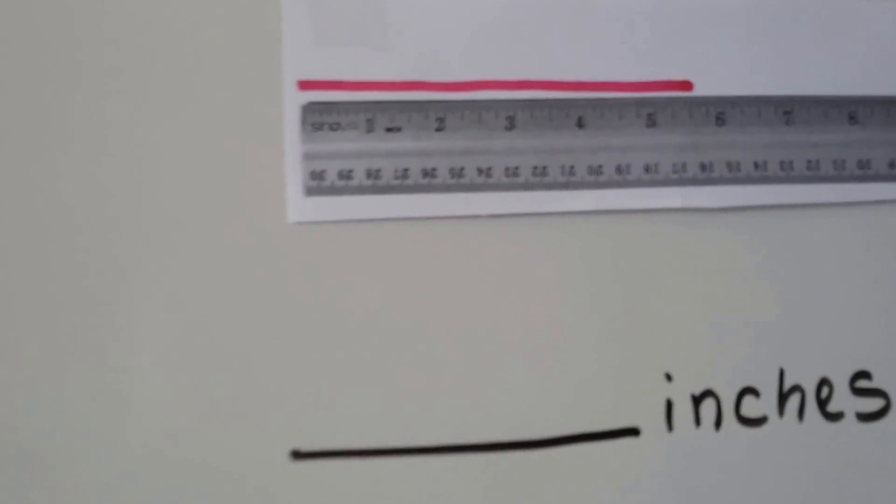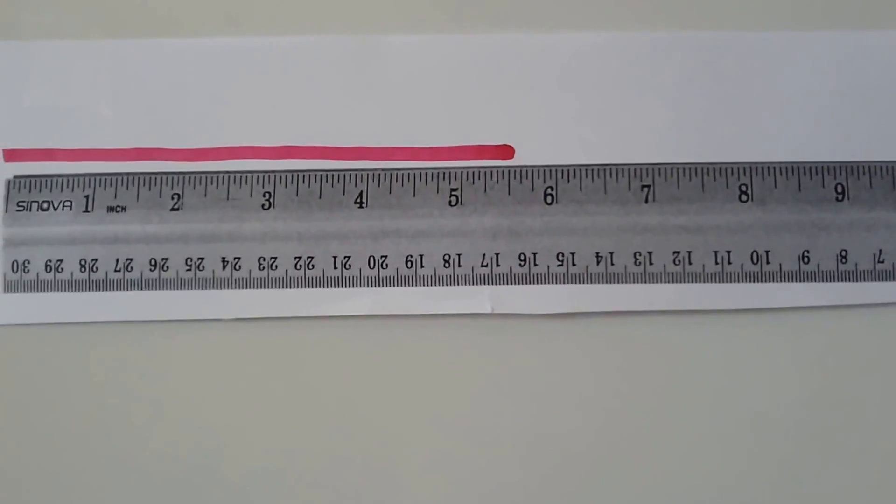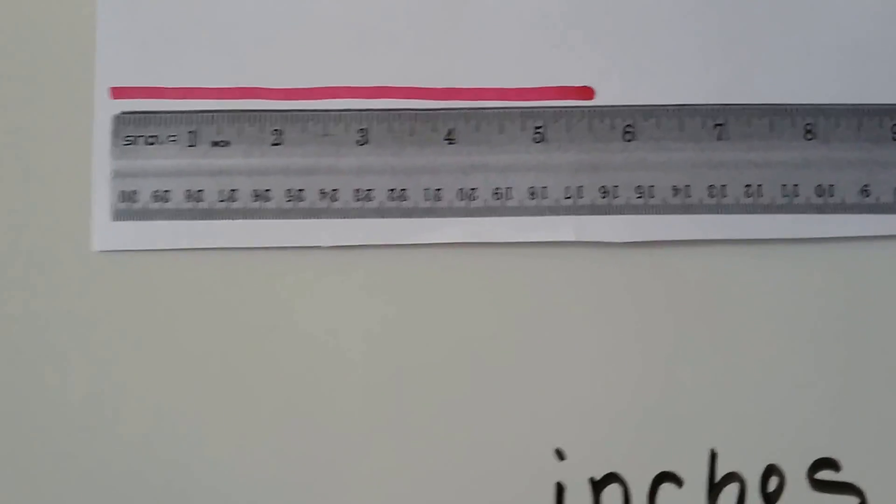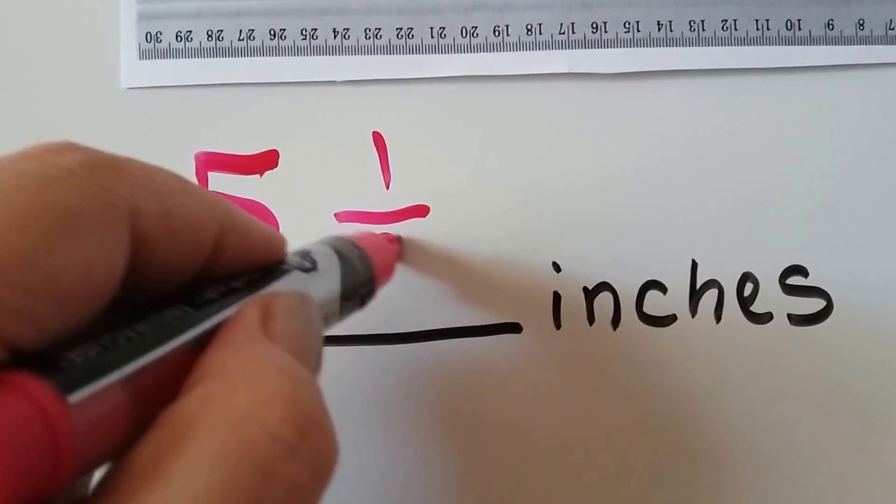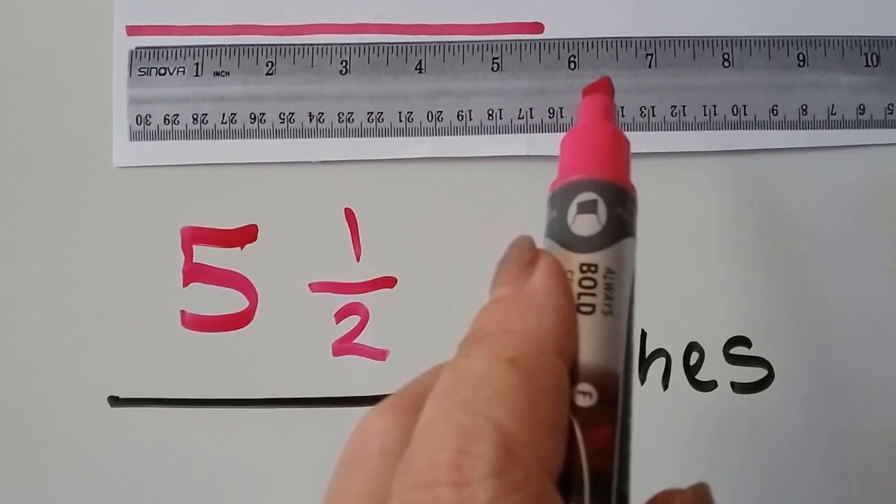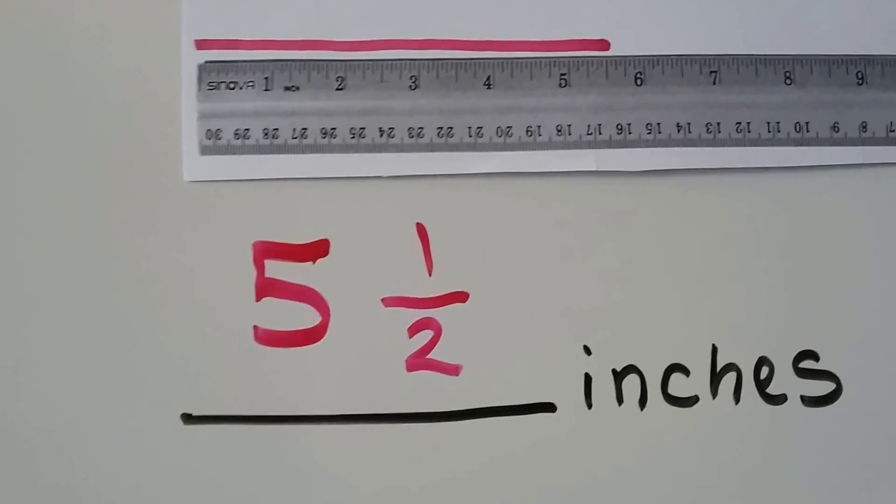Let's try one last one. This dark pink line, we can see that it passed the five, but it didn't quite get to the six, did it? This one is five and a half. It passed the five. It didn't get to the six yet. It's right in the middle between five and six. It's at five and a half.